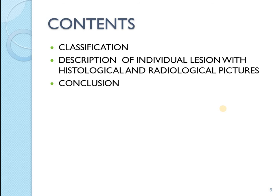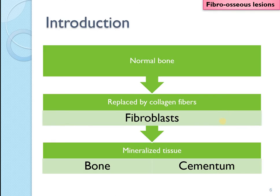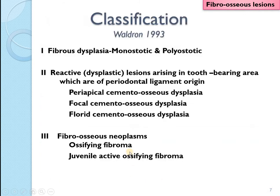Let us have a quick look at the classification system and description of the individual lesions. The normal bone is replaced by collagen fibers — that is the fibrous part. The fibroblasts again get replaced by mineralized tissue, which is not only bone but, since the head and neck region contains cementoblasts, they also deposit something like cementum. Bone can be further divided into woven bone and lamellar bone.